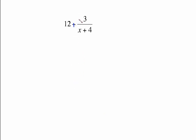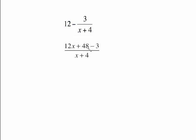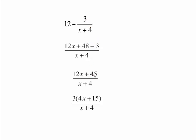It can be helpful to change a subtraction to plus a negative to remind yourself there is a negative up there. In the next example, keep the denominator of x plus 4 and multiply the whole number times the bottom. Distributing 12 gives 12x plus 48, minus 3, over the existing denominator. Combine like terms to get 45. There is a common factor of 3 in the top, but nothing cancels with the denominator, so either form of the answer is fine.